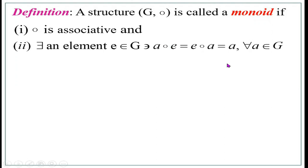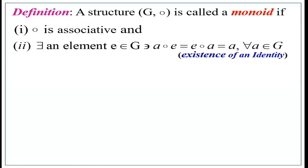This is called the identity property, or existence of identity. Here E is known as the identity element. Thus a monoid should satisfy three conditions: closure, associative, and identity.